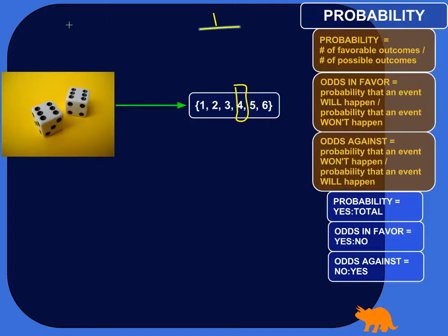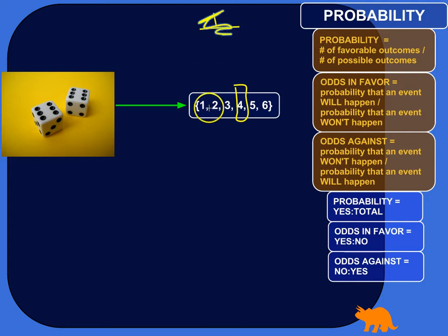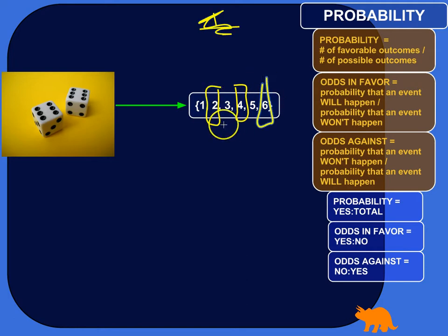In the case of rolling dice and calculating the probability of getting one of the numbers, you'd have one favorable outcome. Let's calculate the probability of rolling an even number. So the probability of A — and I'm going to call A rolling an even number.